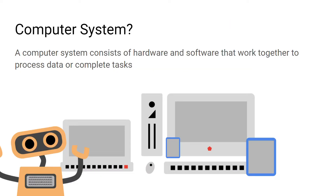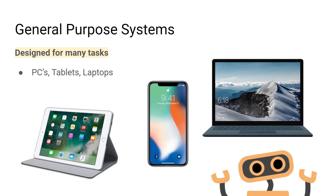When you use hardware and software together to process data or complete a task, it's referred to as a computer system. There are different types of computer systems. The first is a general purpose computer system, which is designed to complete many tasks — examples include laptops, smartphones, and tablets.